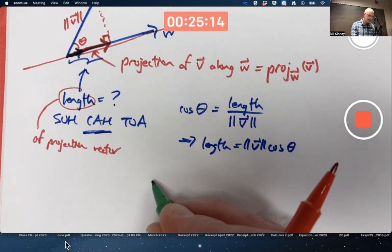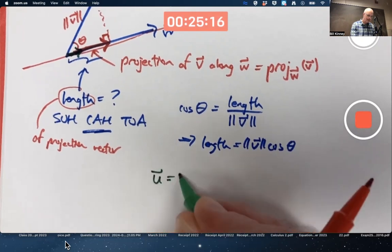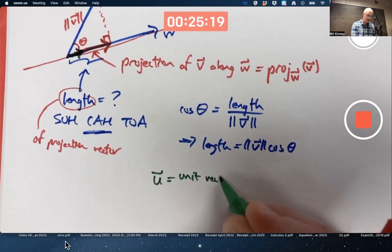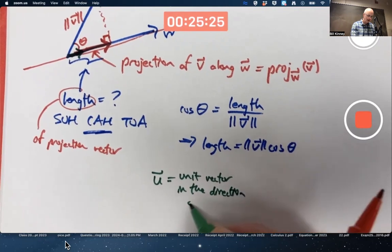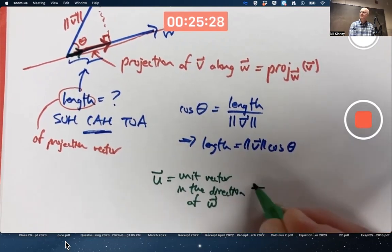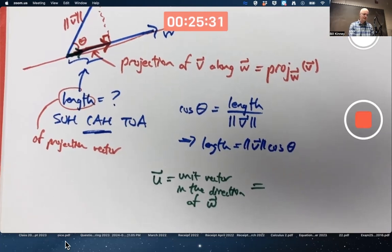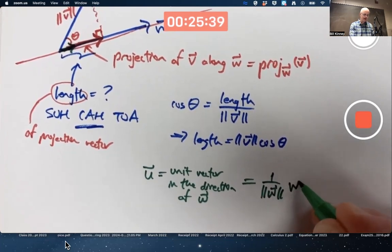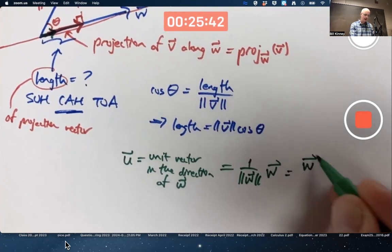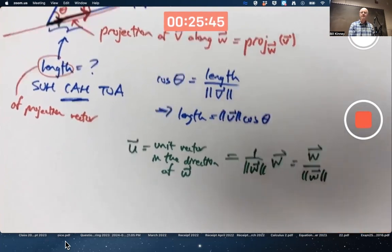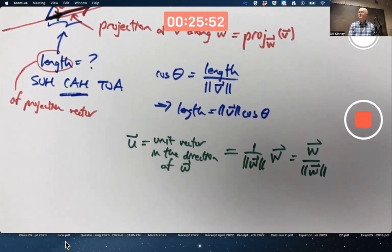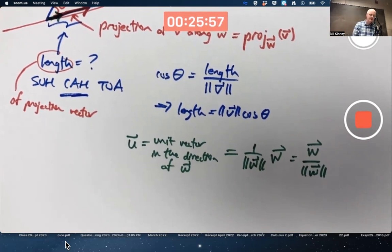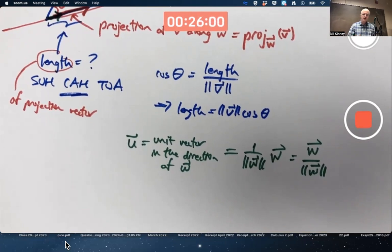So what's a unit vector in the direction of W? How do I find a unit vector in the direction of W? We talked about this last Friday. Multiply W by the inverse or reciprocal of its magnitude, often written for shorthand like this. As long as W is not the zero vector, this is a unit vector in the same direction as W, so we're getting close here.